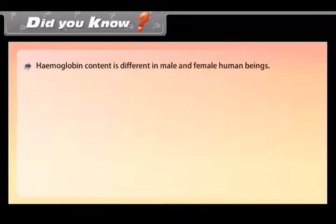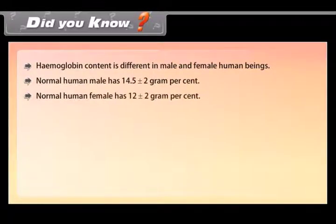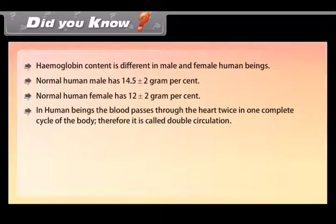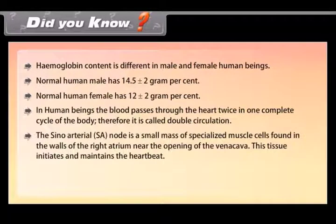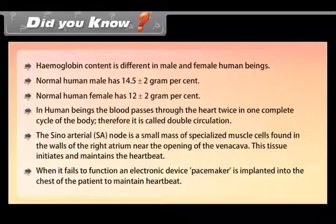Did you know? Hemoglobin content is different in male and female human beings. Normal human male has 14.5 plus minus 2 gram per cent. Normal human female has 12 plus minus 2 gram per cent. In human beings, the blood passes through the heart twice in one complete cycle of the body; therefore it is called double circulation. The sino-arterial SA node is a small mass of specialized muscle cells found in the walls of the right atrium near the opening of the vena cava. This tissue initiates and maintains the heartbeat. When it fails to function, an electronic device pacemaker is implanted into the chest of the patient to maintain heartbeat.